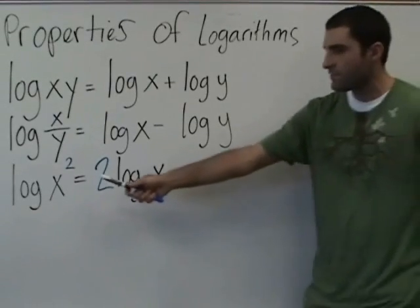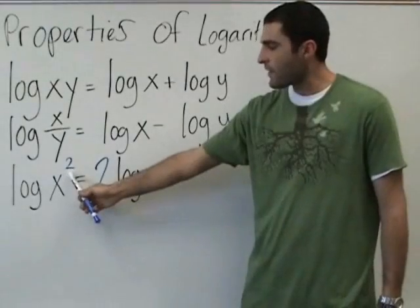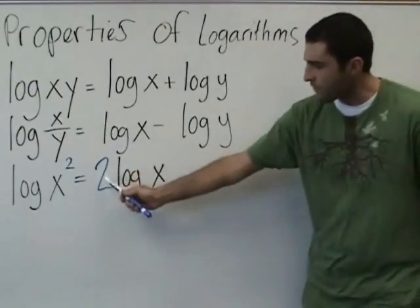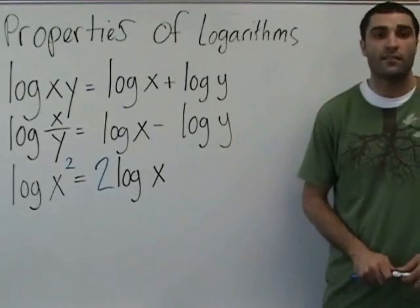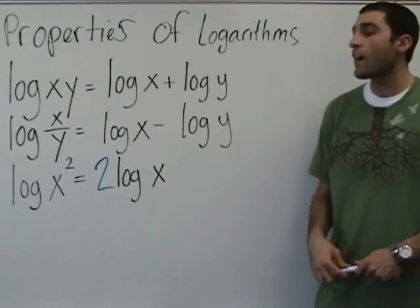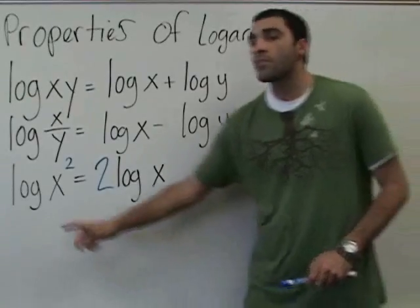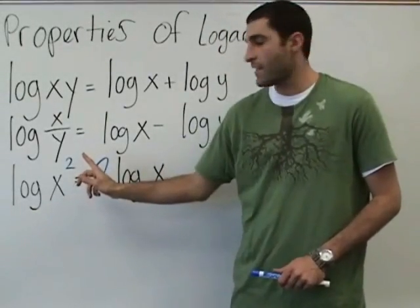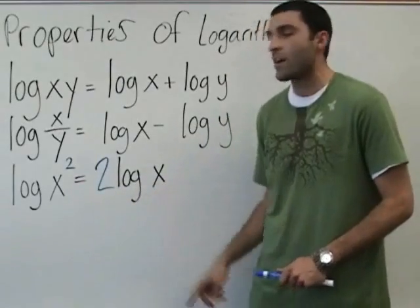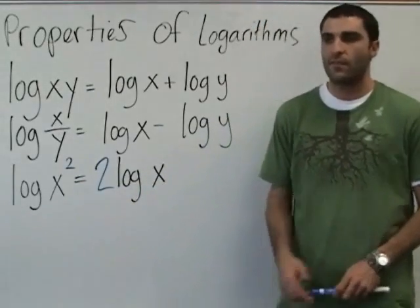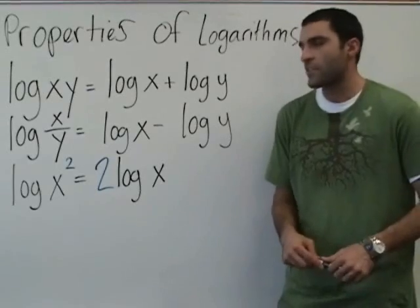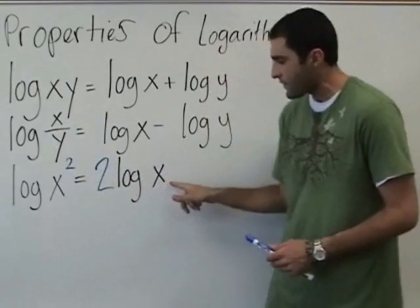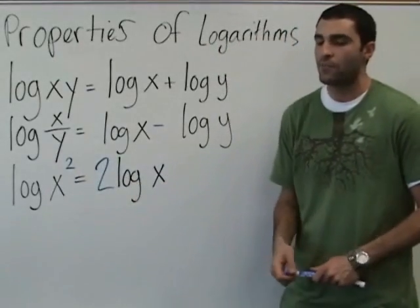So this is the property as well. When you have the squared out here, it's the equivalent of moving the square to the front and saying 2 times the log. In other words, the log of 6 squared is the same as 2 times the log of 6. So now let's try a few problems.